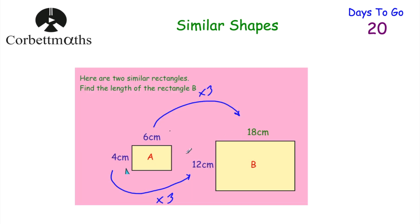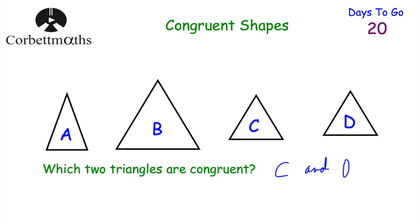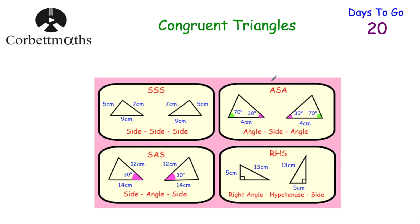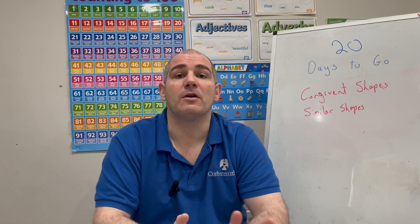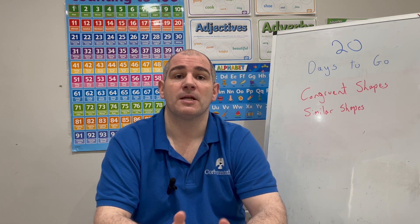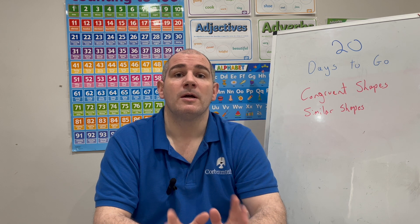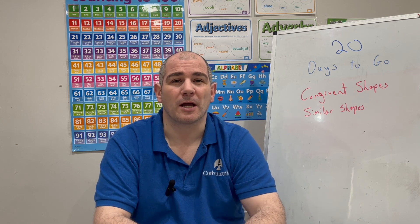In this video we've looked at similar shapes — where shapes are enlargements of each other — and finding missing sides using the scale factor of enlargement. We've also looked at congruent shapes, which are the same size and shape, and the conditions for congruent triangles: Side-Side-Side, Angle-Side-Angle, Side-Angle-Side, and Right angle-Hypotenuse-Side. There's 20 days to go to the GCSE Maths exam, so keep up the hard work.